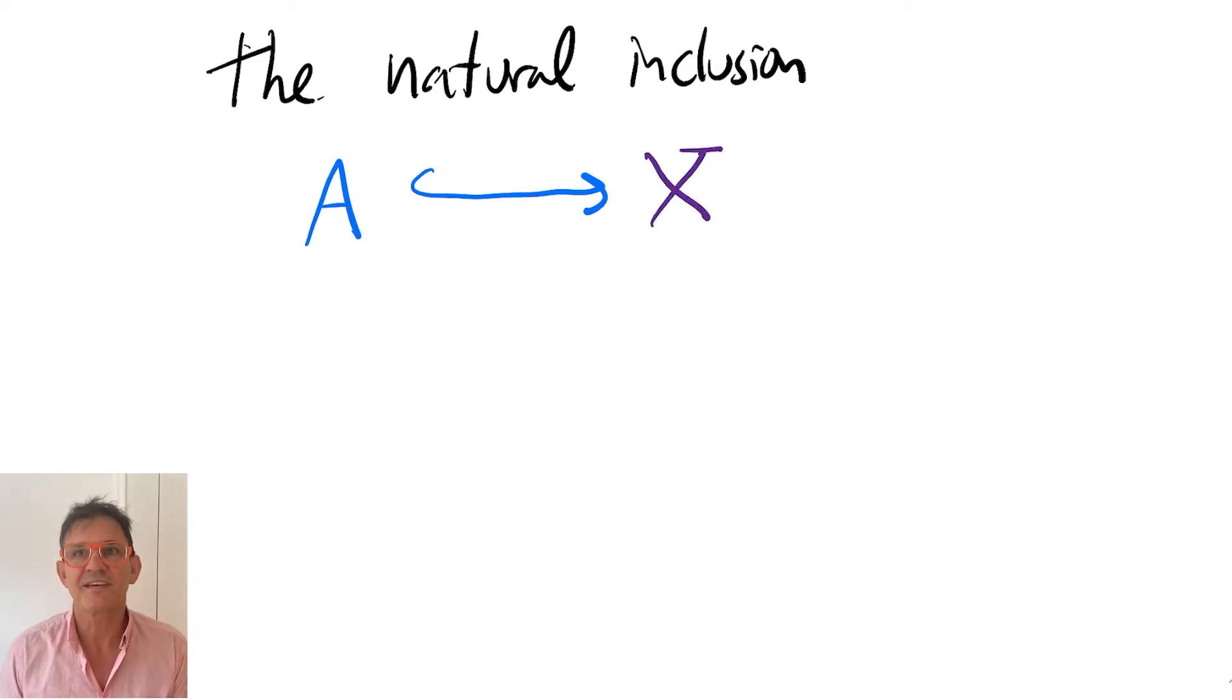For the first reason, consider the fact that there is a natural inclusion map mapping the subset A into the space X. You'd really like to have this arrow in the category of topological spaces.